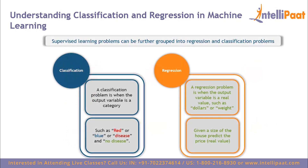Supervised learning is classified into two algorithm categories: classification and regression. A classification problem is when the output variable is a category, such as red or blue, or disease and no disease. A regression problem is when the output variable is a real value, such as dollars or weight.